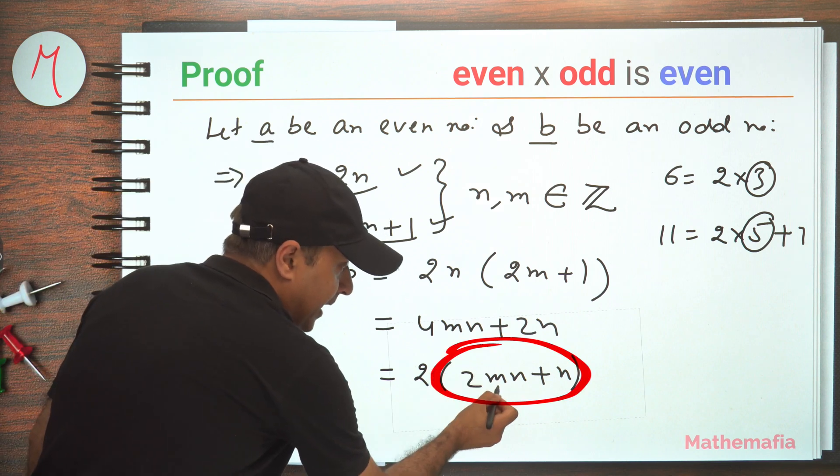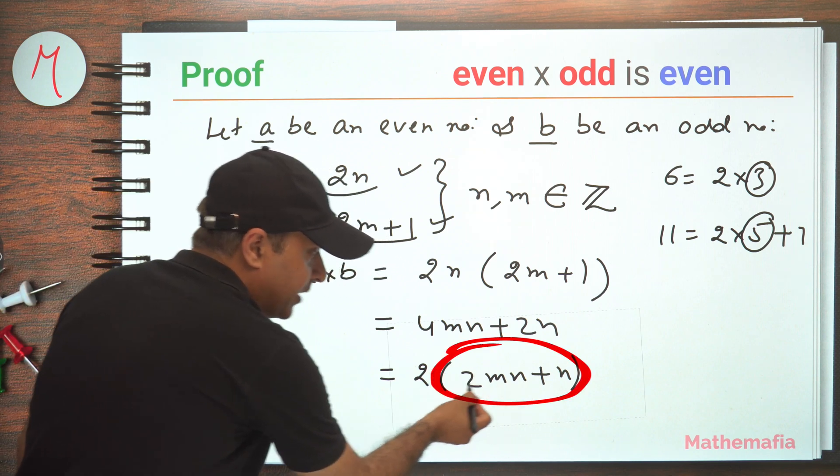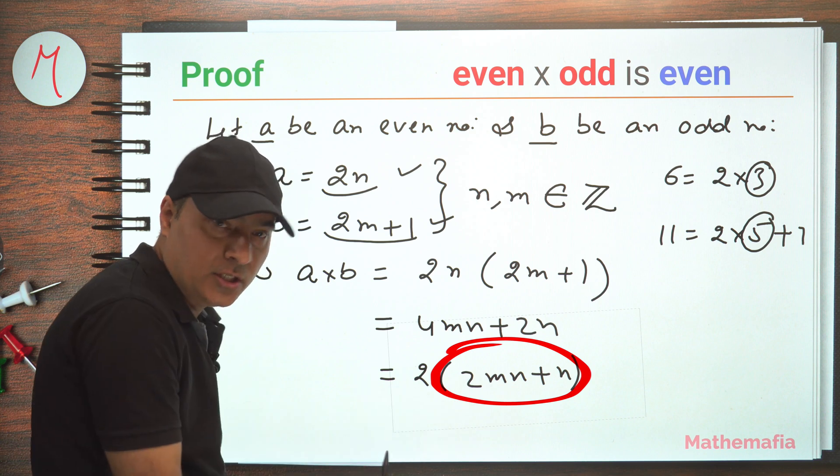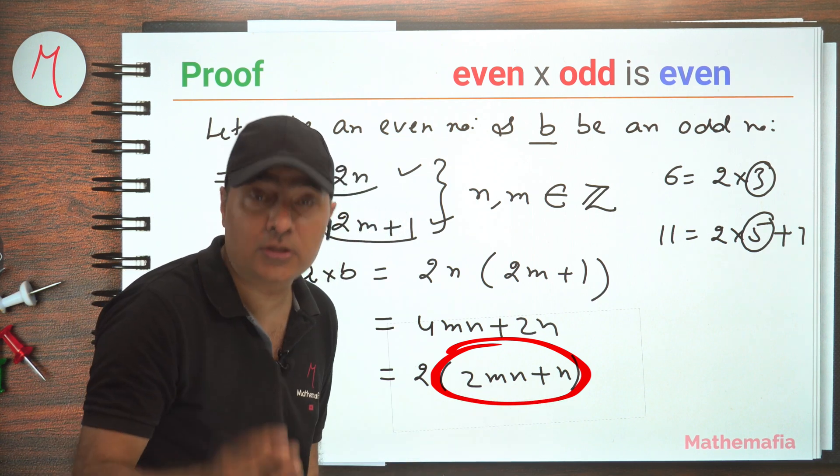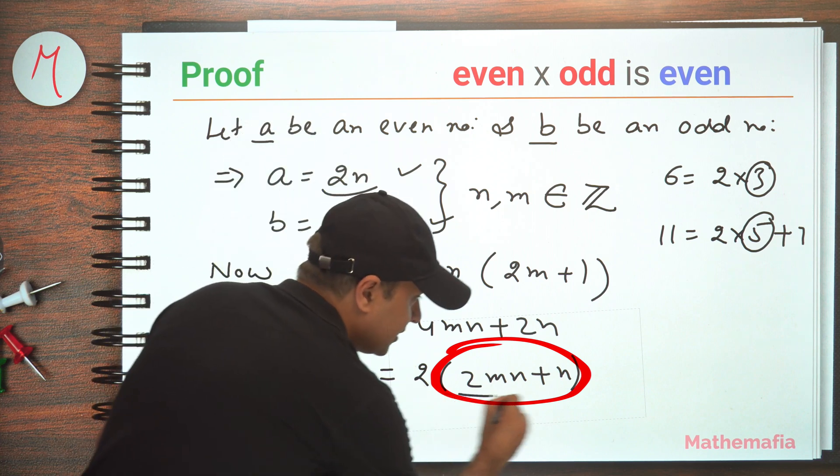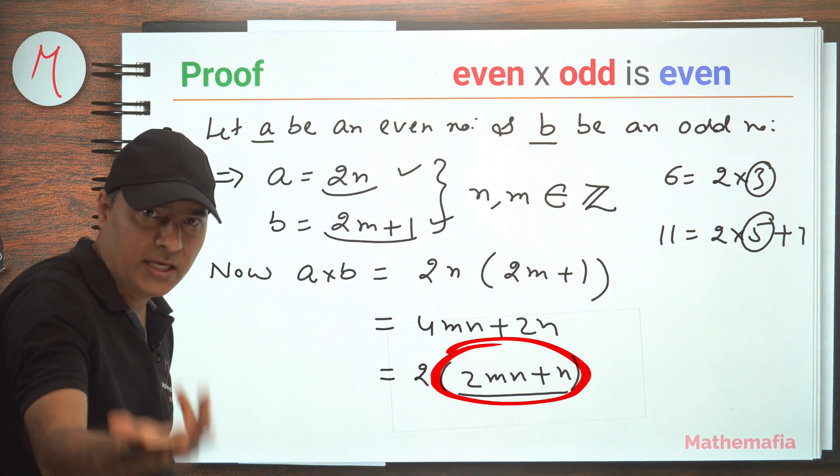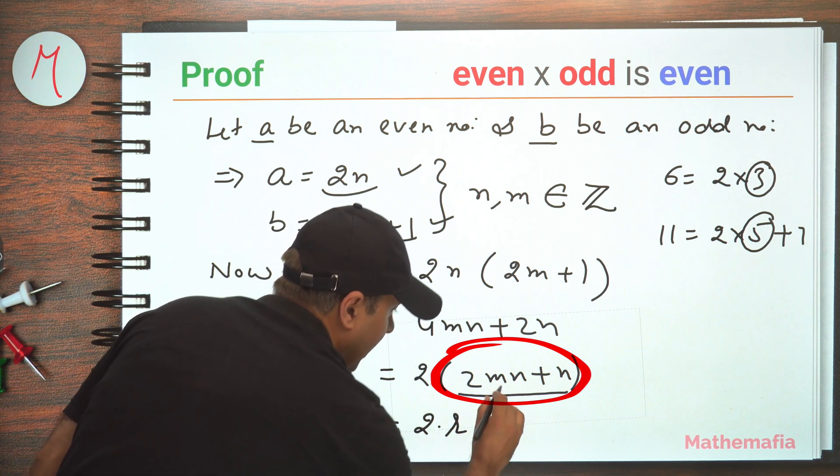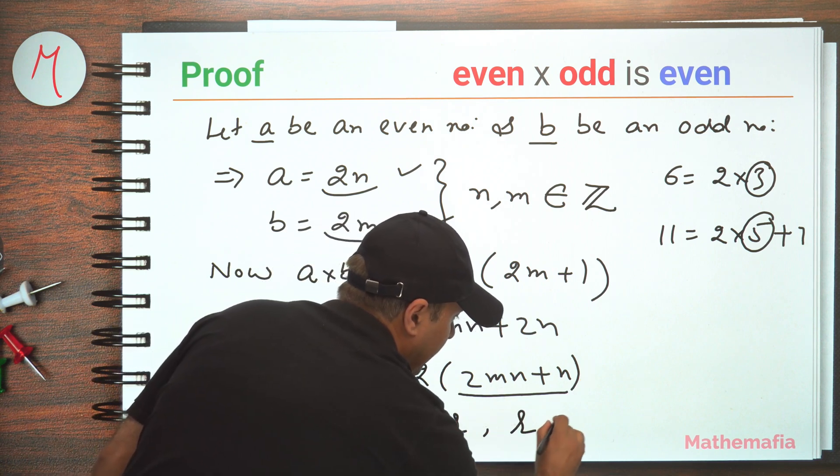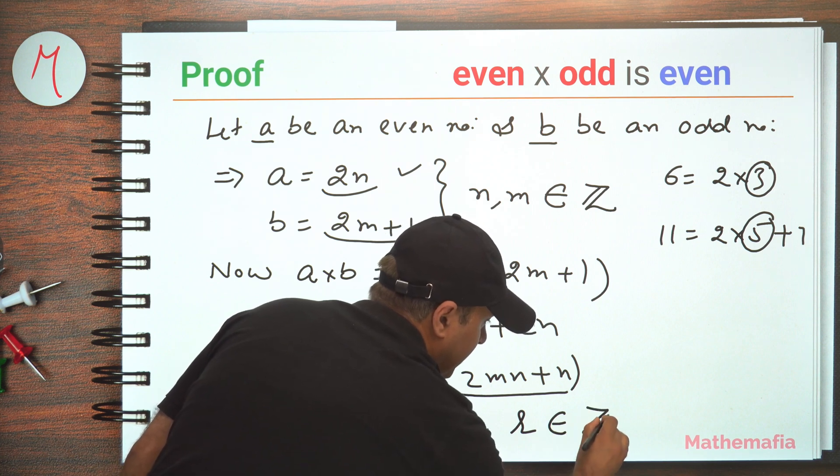Now 2 is an integer, m is an integer, n is an integer. So then integer plus integer will again be an integer. So let's call this as r. Let's name it r. So we can write this is equal to 2 into r, where we know that r is also an integer.